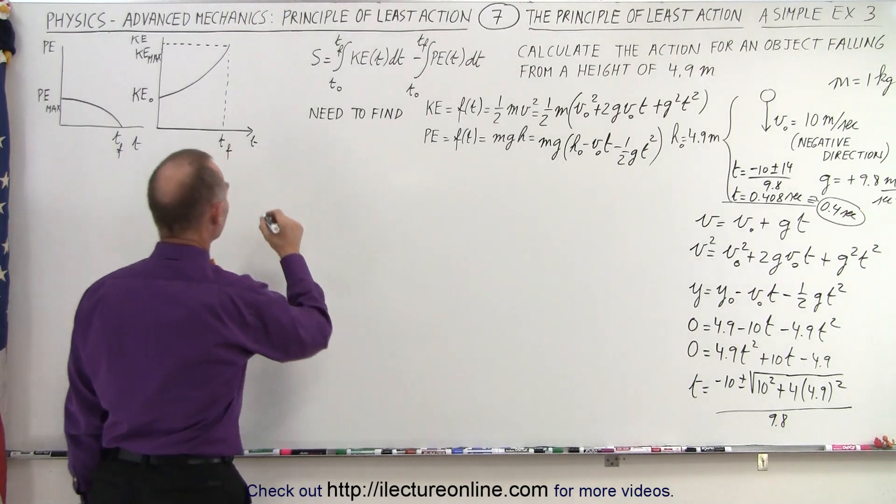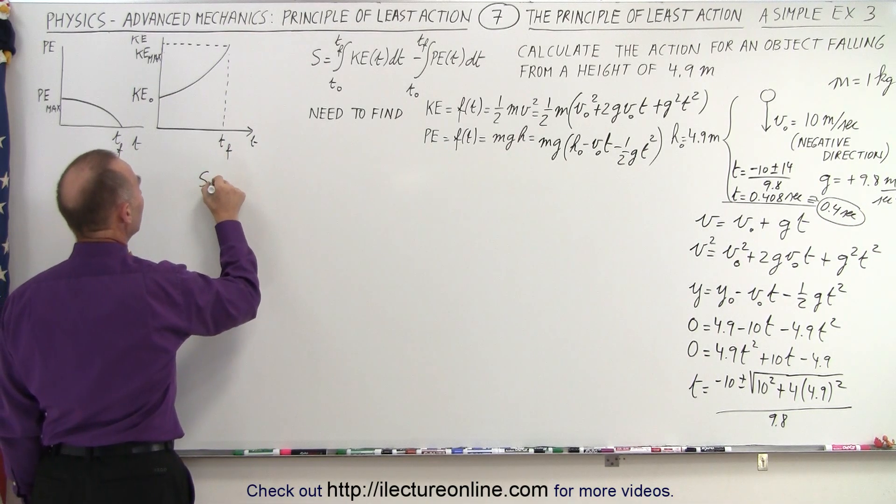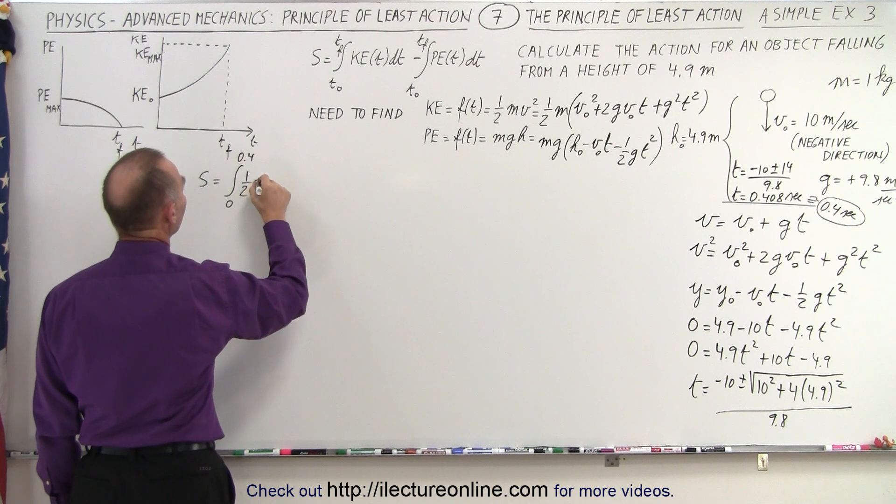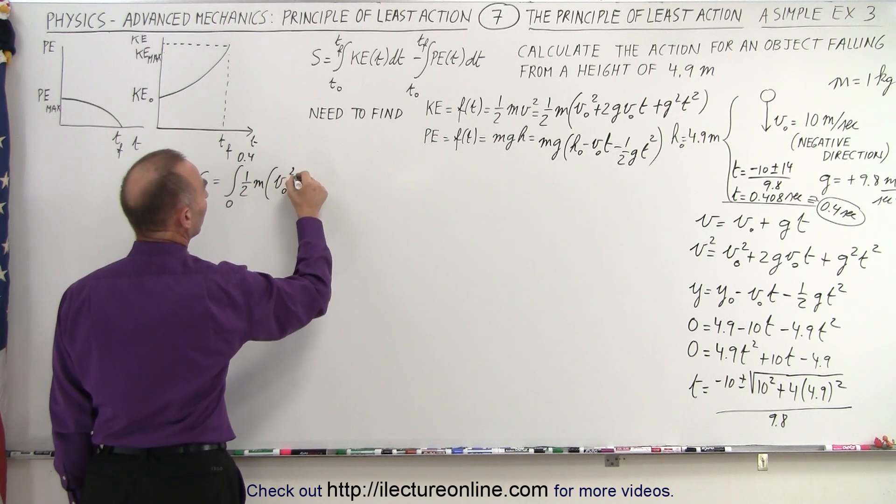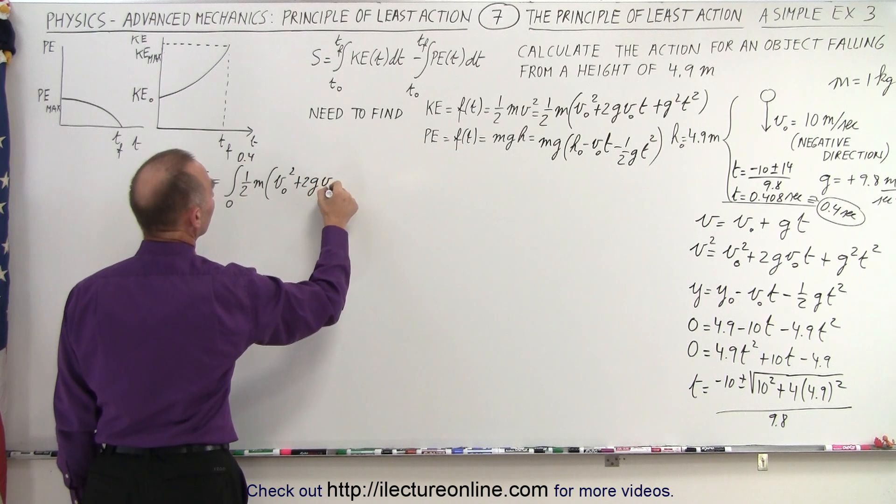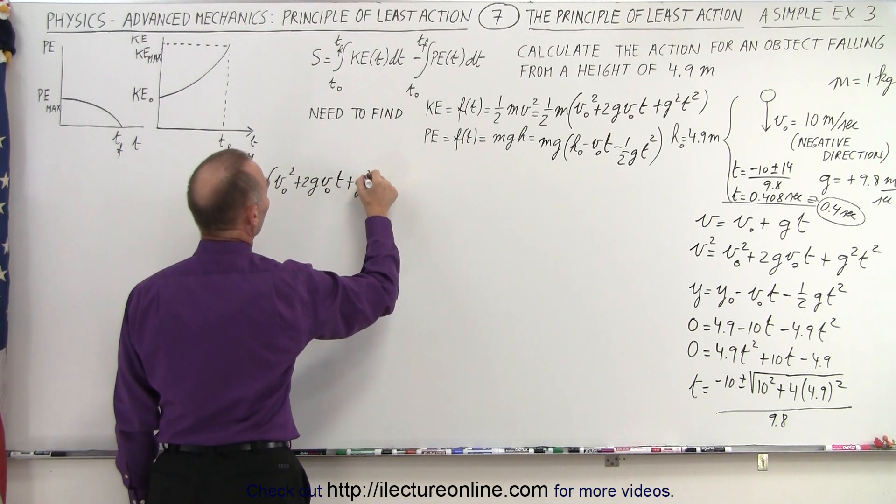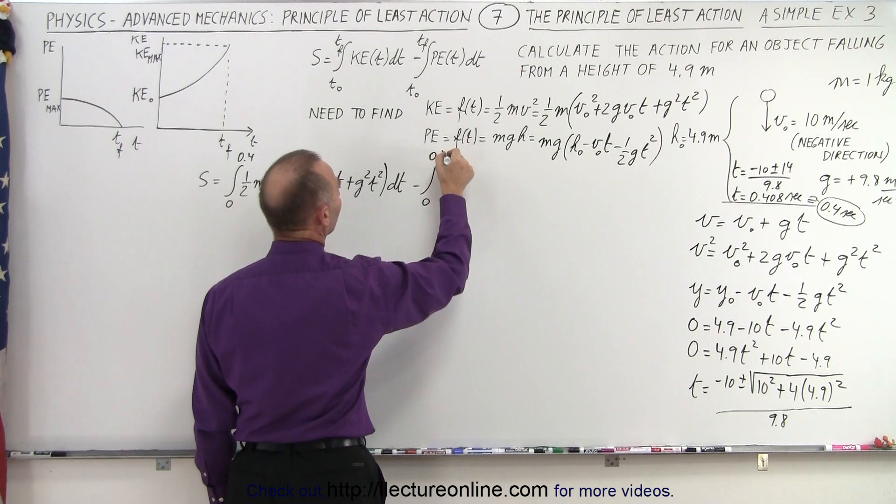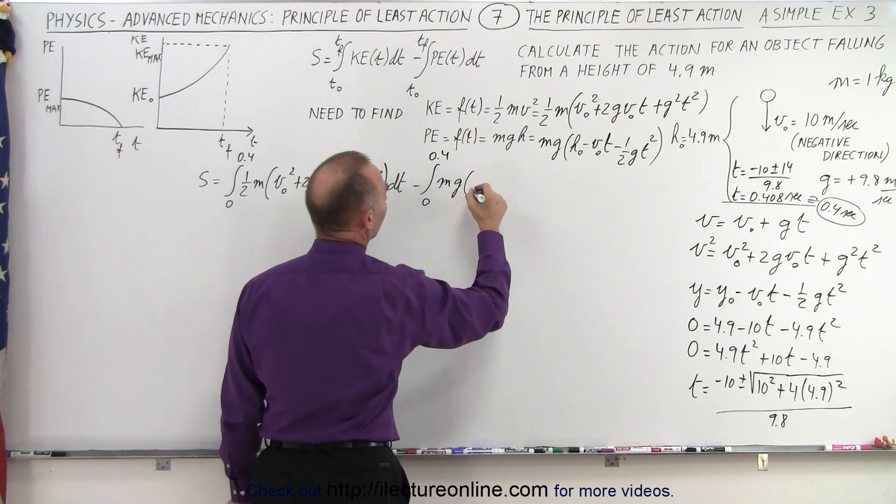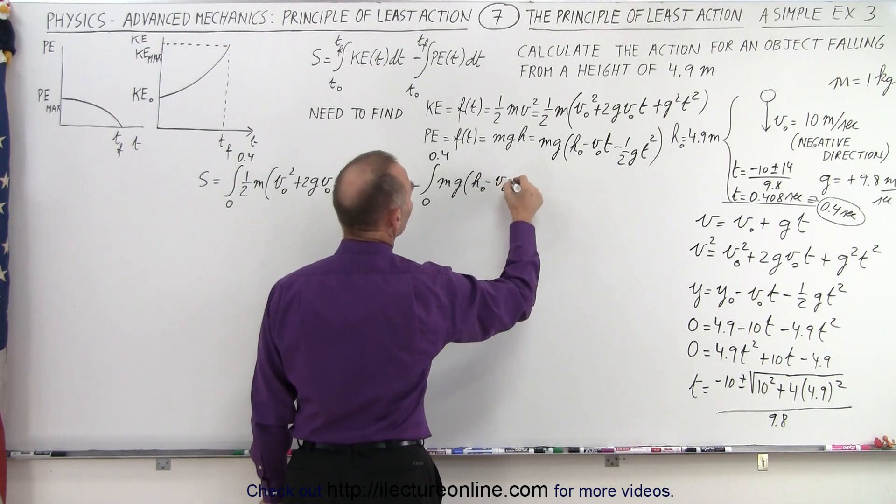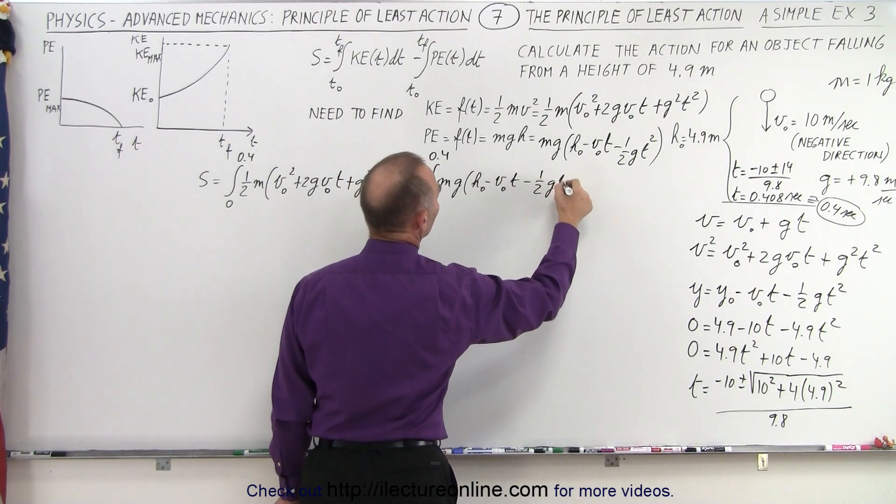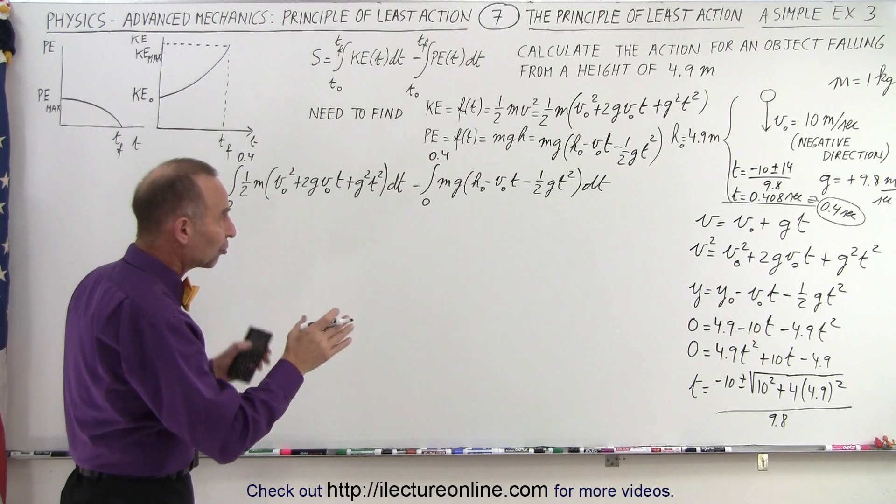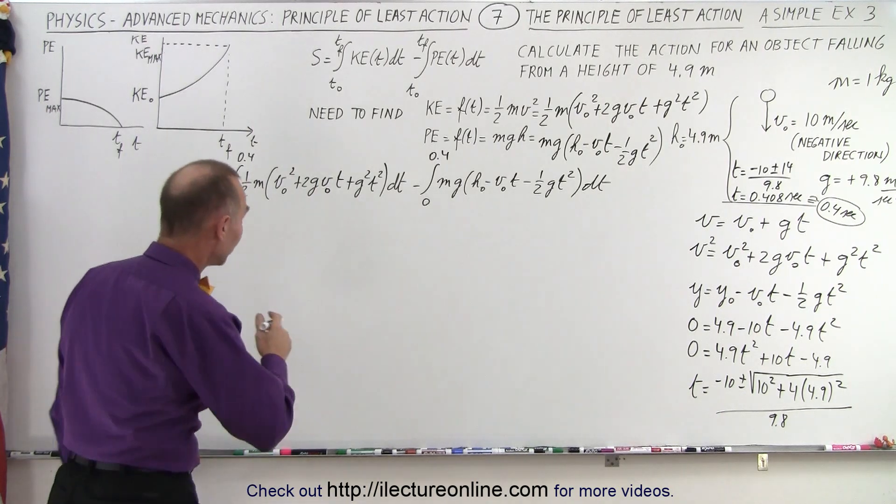All right, now we're ready to integrate. So least action, s equals the integral from 0 to 0.4. Kinetic energy would be one half m times v initial squared plus 2g v initial times t plus g squared t squared times dt minus the integral from 0 to 0.4 of potential energy mg times h initial minus v initial times time minus one half g t squared, and that's also times dt. So once we do that integral, that'll be the action for that path, presumably the least action.